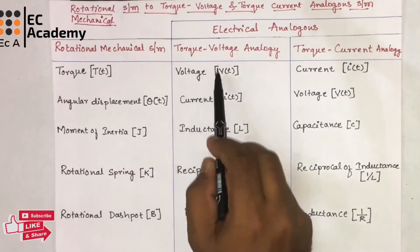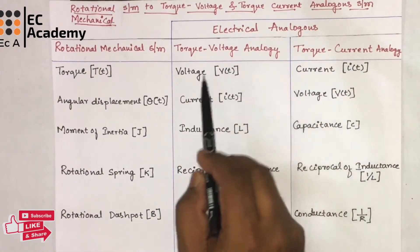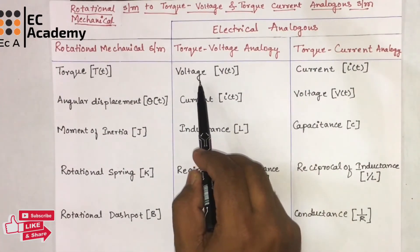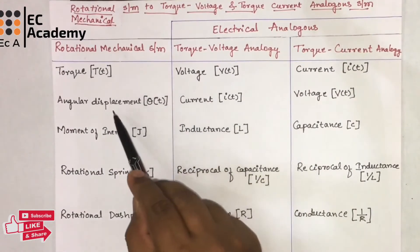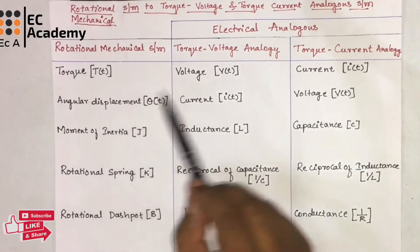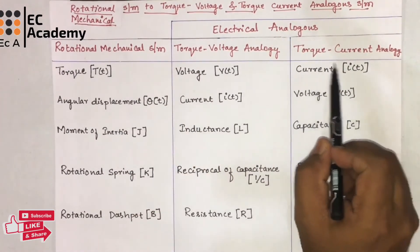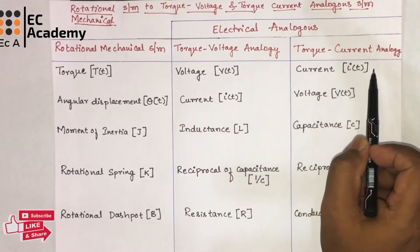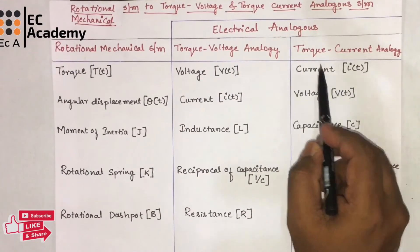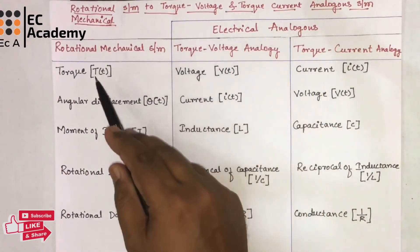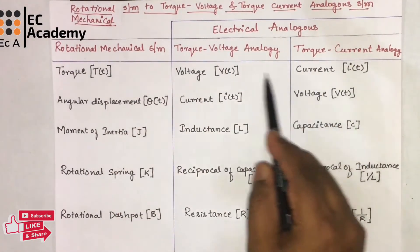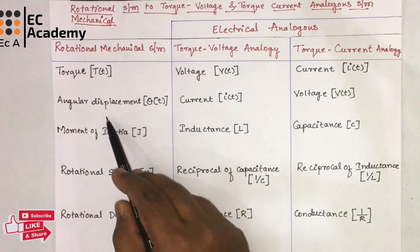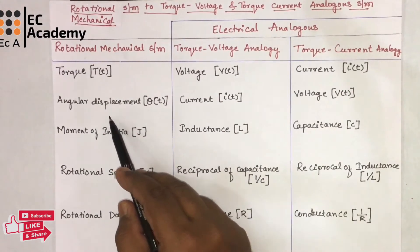In torque voltage analogous circuit, voltage is analogous to torque and current is analogous to displacement. And in torque current analogous circuit, current will be analogous to torque and voltage will be analogous to angular displacement.